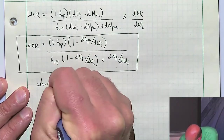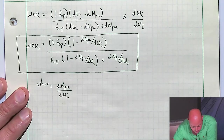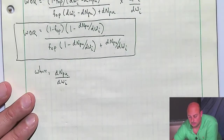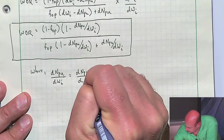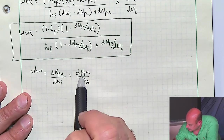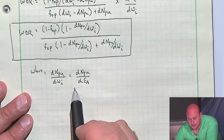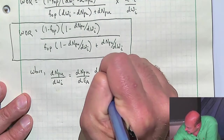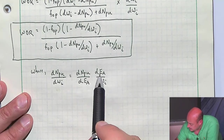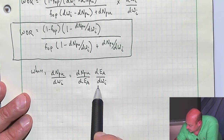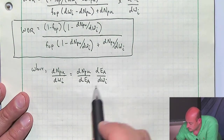For DNPU divided by DWI, I'm going to use the chain rule. That gives DNPU/DEA — how much incremental oil is produced in the unswept zone by increasing the aerial sweep efficiency by some incremental amount — times DEA/DWI, which is how much the aerial sweep efficiency changes with an incremental amount of water injected. The DEA terms cancel, leaving DNPU/DWI.